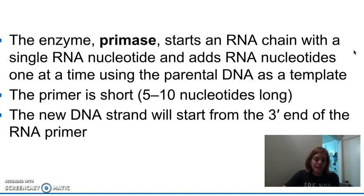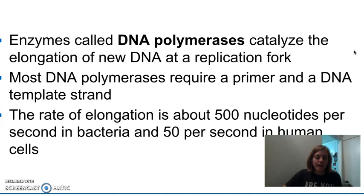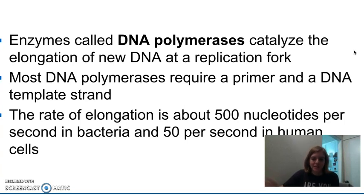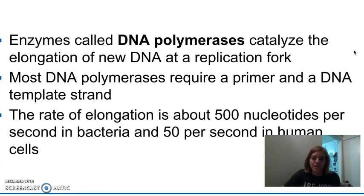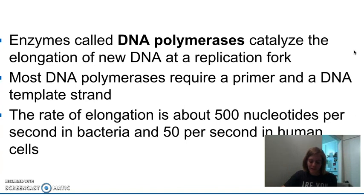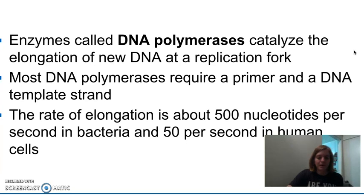The new DNA strand will begin from the three prime end of the primer. There are different types of enzymes known as DNA polymerases, and they are responsible for catalyzing the elongation of DNA at the replication fork. They require that RNA primer and then a template strand, which is formed by that unwinding. DNA polymerase adds nucleotides to the three prime end of the primer using the parental strand as a template, adding the corresponding complementary nucleotides.